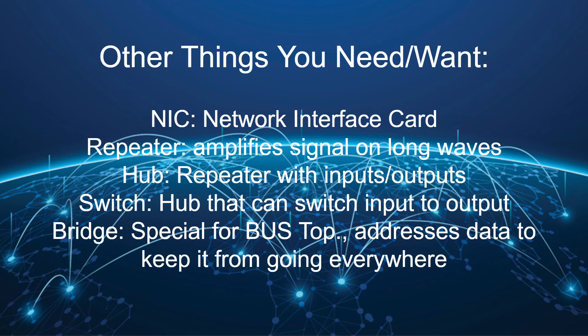A switch is a hub with a switch on it — it can both receive input from and send output to the same device. A hub has one side for inputs and one side for outputs and can't switch between them; a switch can both listen to a device and speak to a device. A bridge is a special device used only for bus topologies — it gives the data an address to keep it from going to all machines. In a bus topology, if a machine sends a signal it goes everywhere, but installing a bridge means it can communicate to just one specific device.